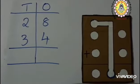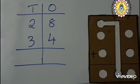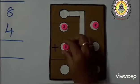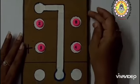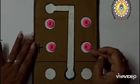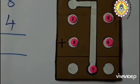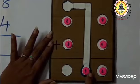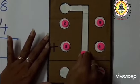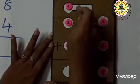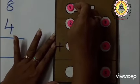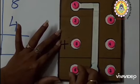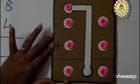Let us do one more sum children. 28 plus 34. Now let us add 1's place: 8 plus 4 is equal to 12. 2 is in 1's place and in 10's place there is 1. Carry over this number to 10's place. Now let us count 10's place: 1 plus 2 is equal to 3, and 3 plus 3 is equal to 6. 28 plus 34 is equal to 62.